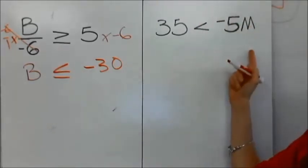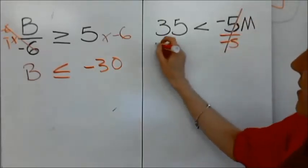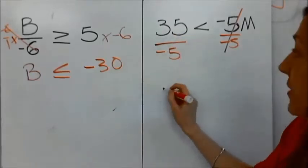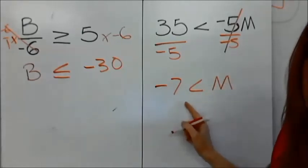Over here we have 35 is less than negative 5m. I'm going to divide by negative 5, divide by negative 5. I get negative 7 is less than m, or m is greater than negative 7.